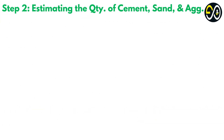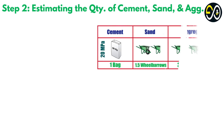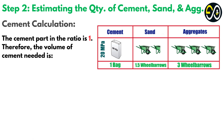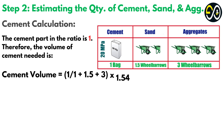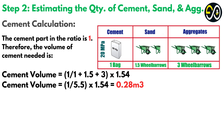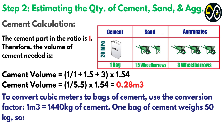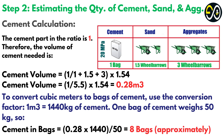Step two: estimating the quantity of cement, sand and aggregate. Now that we know the dry volume, we need to calculate the quantity of cement, sand and aggregate required based on the 1 to 1.5 to 3 ratio. Cement calculation: the cement part in the ratio is 1. Therefore, the volume of cement needed is: Cement volume equals 1 divided by (1 + 1.5 + 3) times 1.54, which equals 1/5.5 × 1.54 equals 0.28 cubic metres. To convert cubic metres to bags of cement, use the conversion factor: 1 cubic metre equals 440 kilograms of cement, and one bag of cement weighs 50 kilograms. So cement in bags equals 0.28 × 440 / 50, approximately 8 bags.